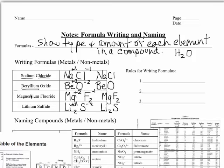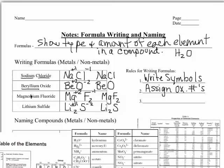If we were to come up with some rules for writing formulas: first, write the element symbols. Then assign the oxidation numbers. And then balance them with subscripts. That's all there is to it for binary compounds.